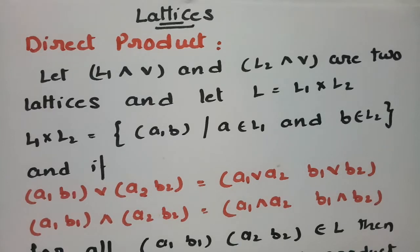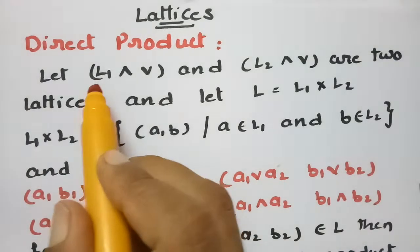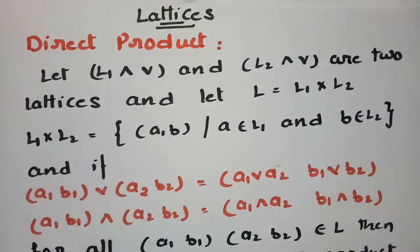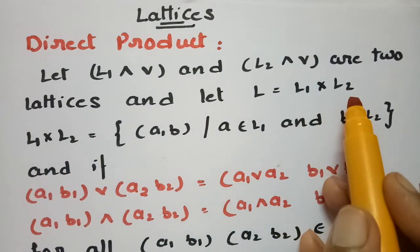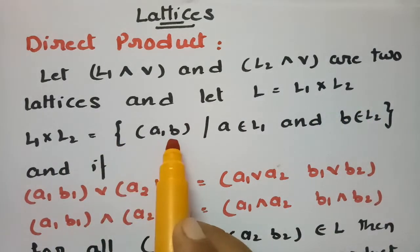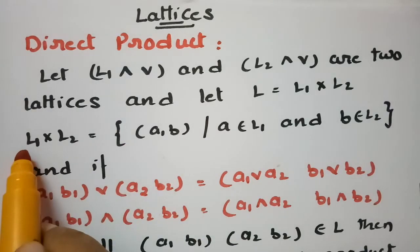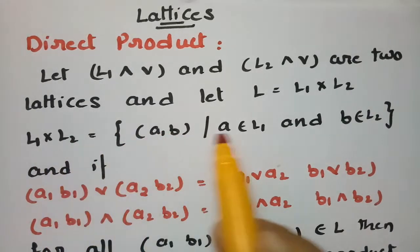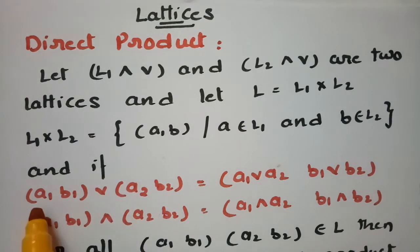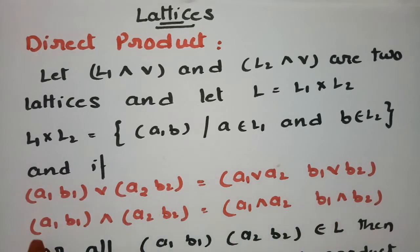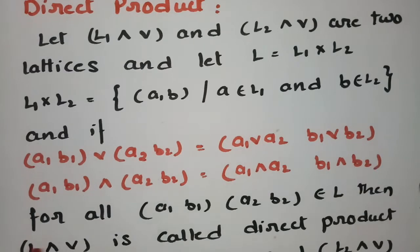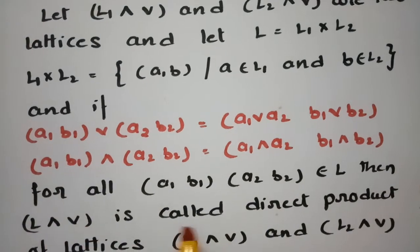This topic is on direct product, from lattices. Let L1 and L2 be two lattices. Let L equal L1 × L2, where L1 × L2 is the set of pairs (A, B) where A belongs to L1 and B belongs to L2. The conditions are: (A1,B1) join (A2,B2) = (A1 join A2, B1 join B2), and (A1,B1) meet (A2,B2) = (A1 meet A2, B1 meet B2) for all (A1,B1), (A2,B2) in L. Then L with meet and join is called the direct product.